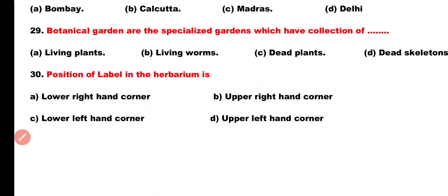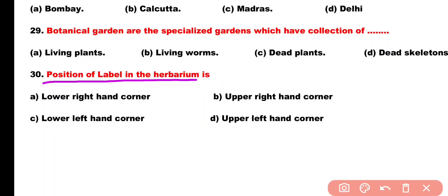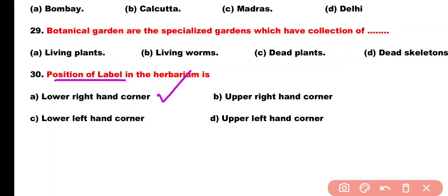Question number 30. Position of the label on a herbarium sheet is: Option A: Lower right-hand corner, Option B: Upper right-hand corner, Option C: Upper left-hand corner, Option D: Lower left-hand corner. Correct answer is Option A. The label is placed at the lower right-hand corner of the herbarium sheet.